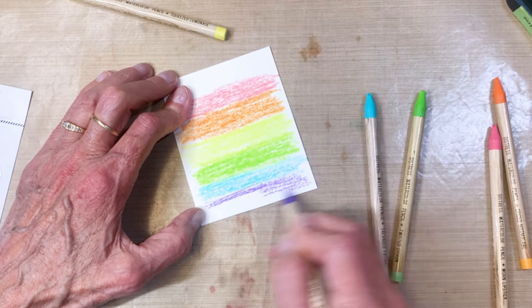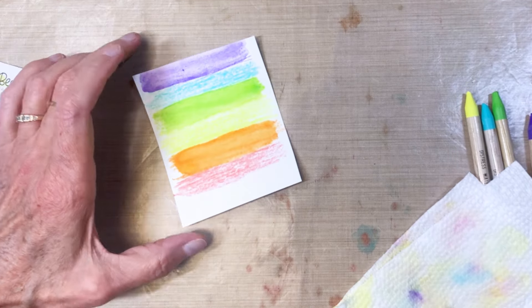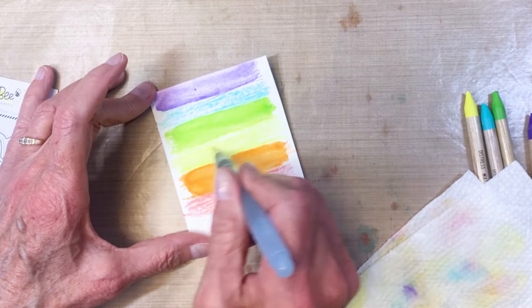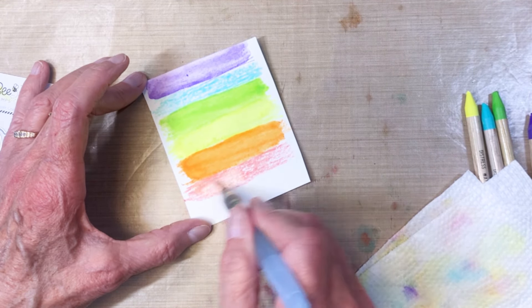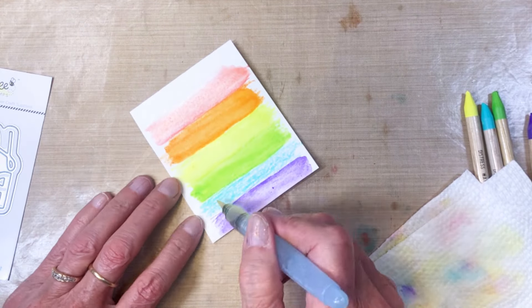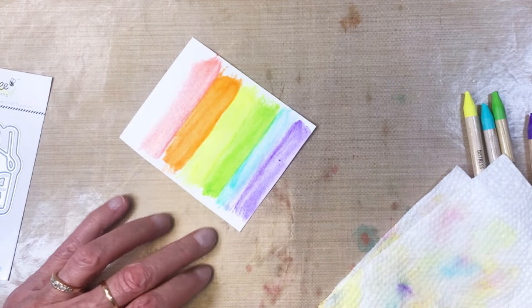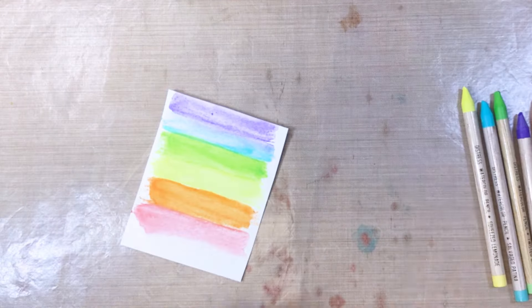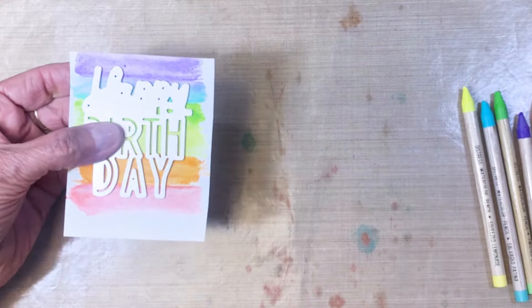I'm going to grab a watercolor brush and smooth out those colors. It worked really well. I've got a paper towel there so I can clean the brush off in between colors. I'm just watercoloring them out and then once that's dry we'll die cut the happy birthday out of it.